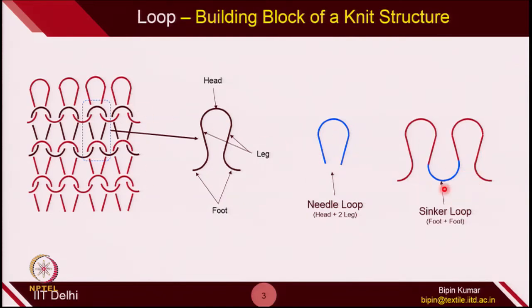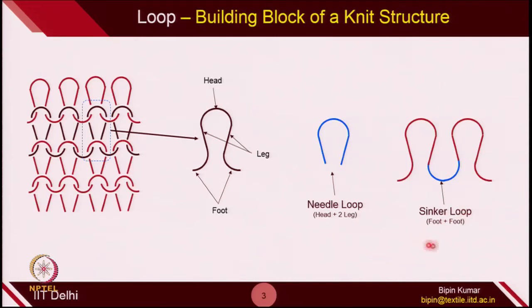So needle loop and sinker are two of the major elements which help to create different parts of the loop. We are going to study needle and sinker components later in this course. For now, understand that sinker connects two loops sideways, while the needle loop is actually getting intermeshed with the loops above and below — it participates in intermeshing. Each part of the loop actually helps in creating some intermeshing points inside the fabric structure.